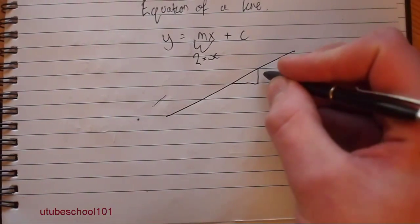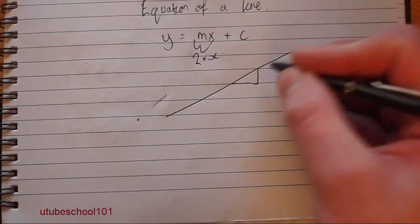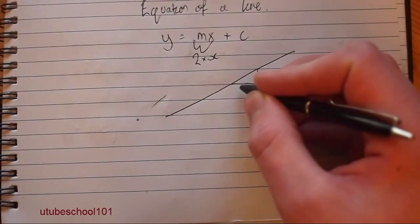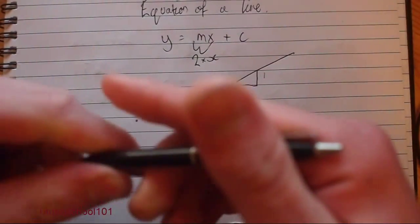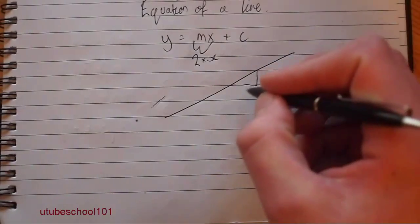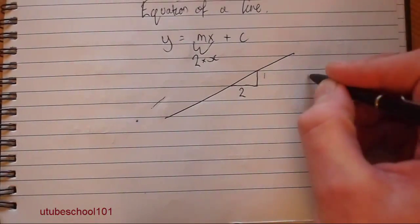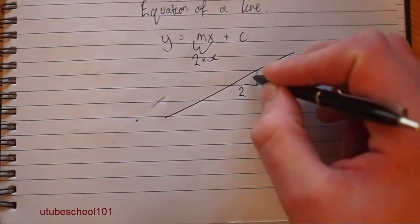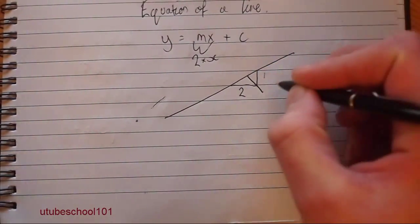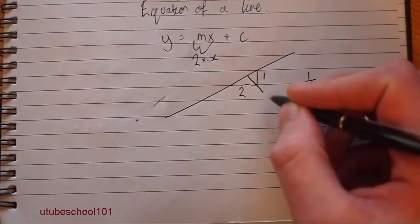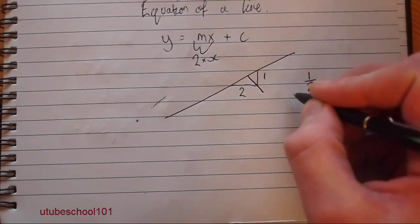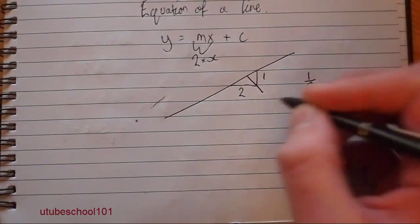To work out the gradient, you divide the amount you have gone up by by the amount it took in the x distance. So what I mean by that is if you go up one and the cross is two, your gradient is going to be one over two. So imagine just drawing a divide sign like that, and you have yourself your gradient, because one over half is 0.5, which is your gradient.